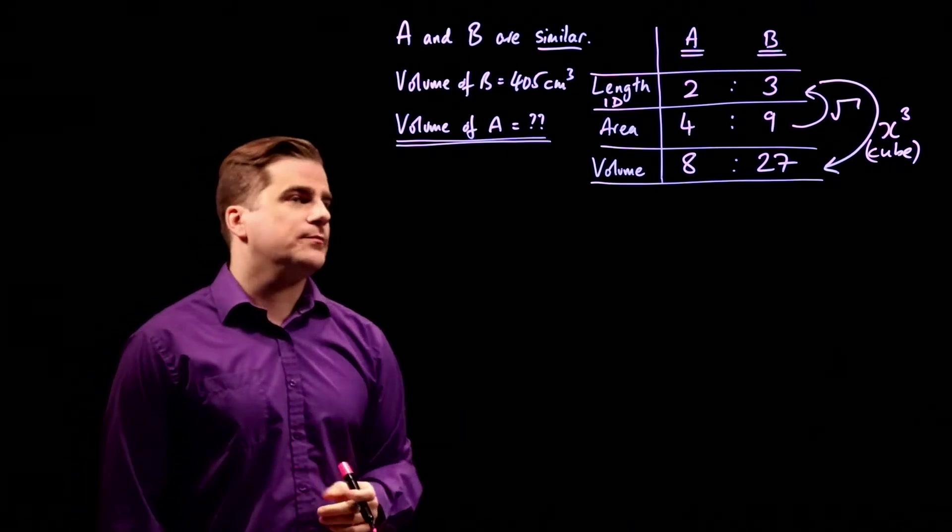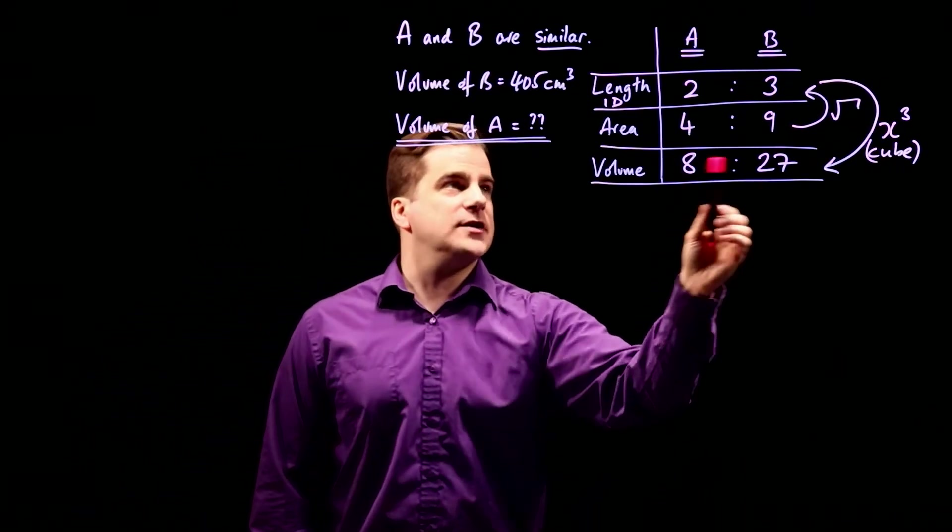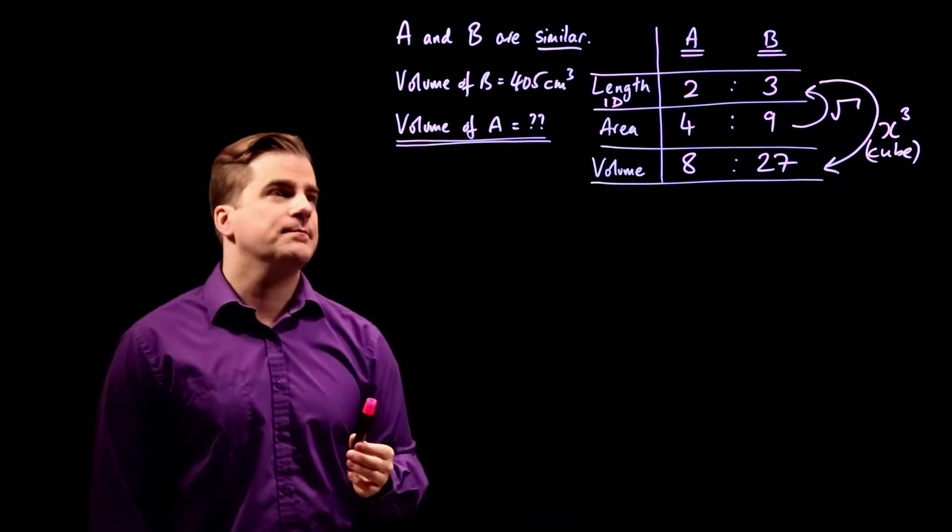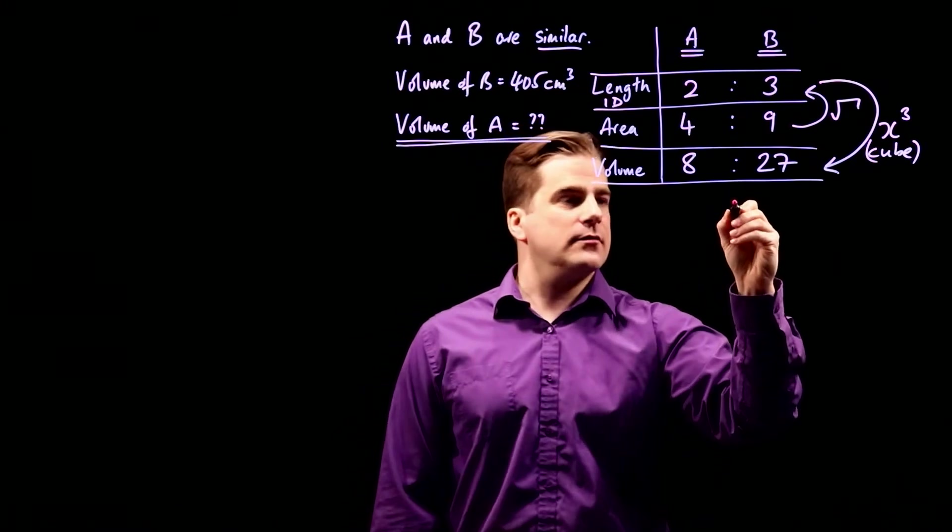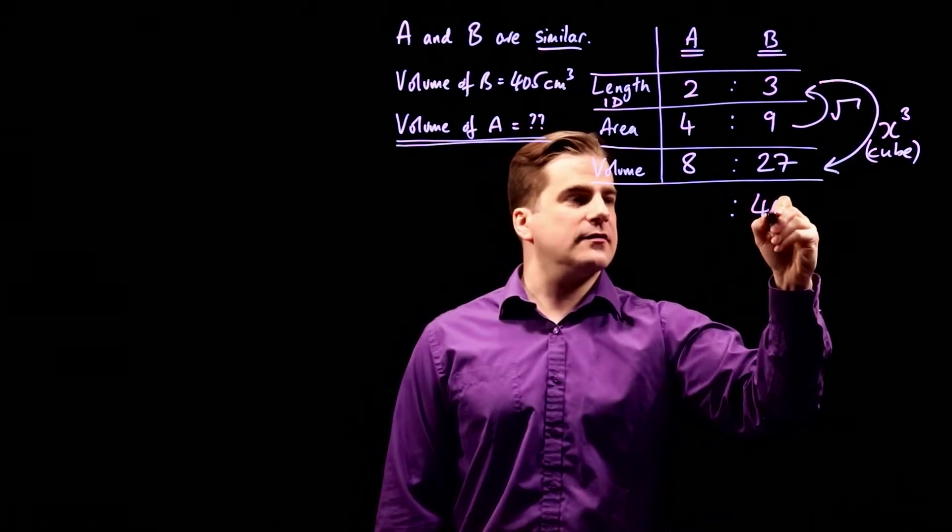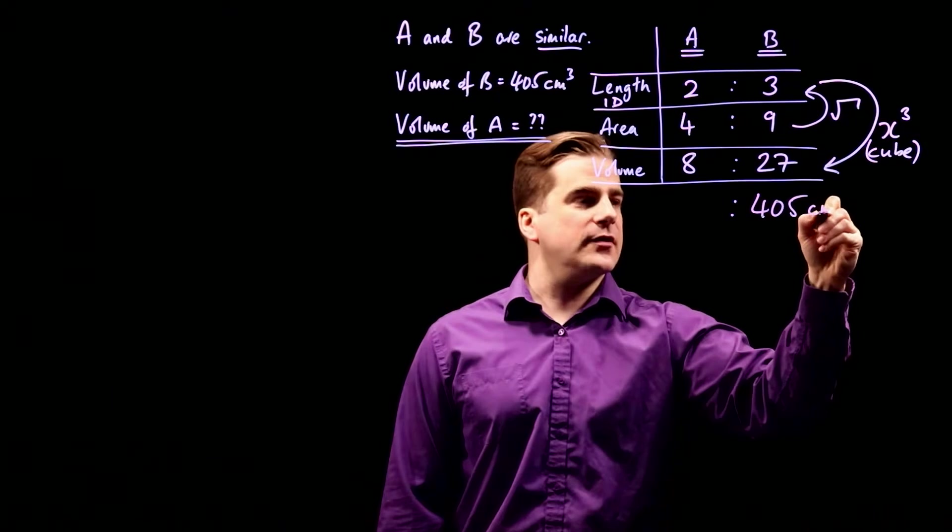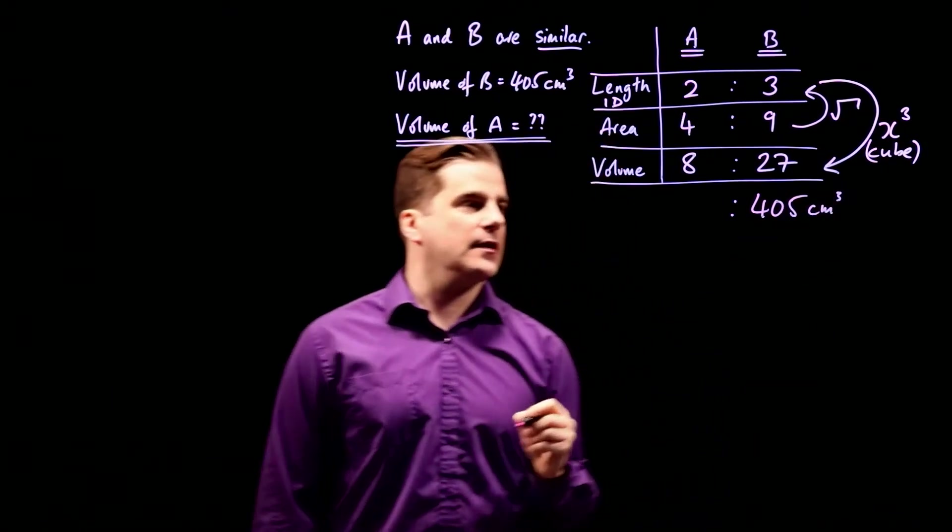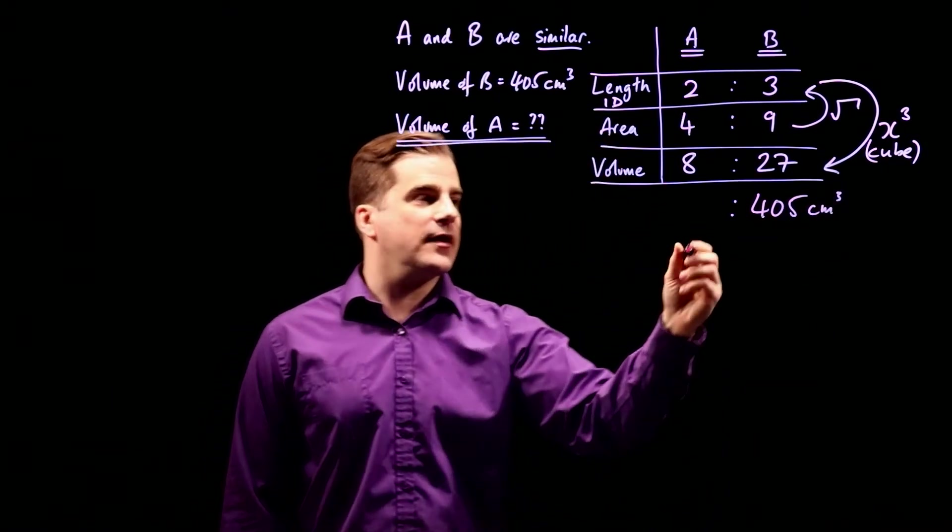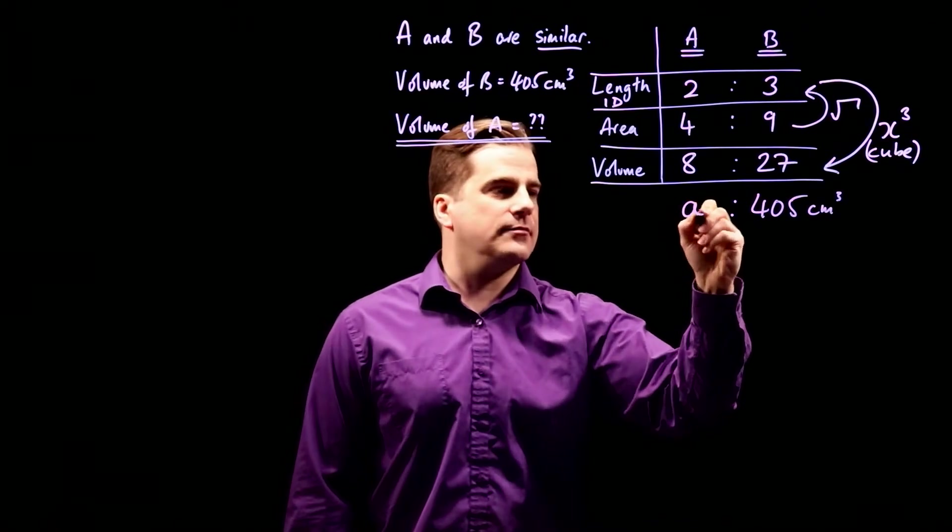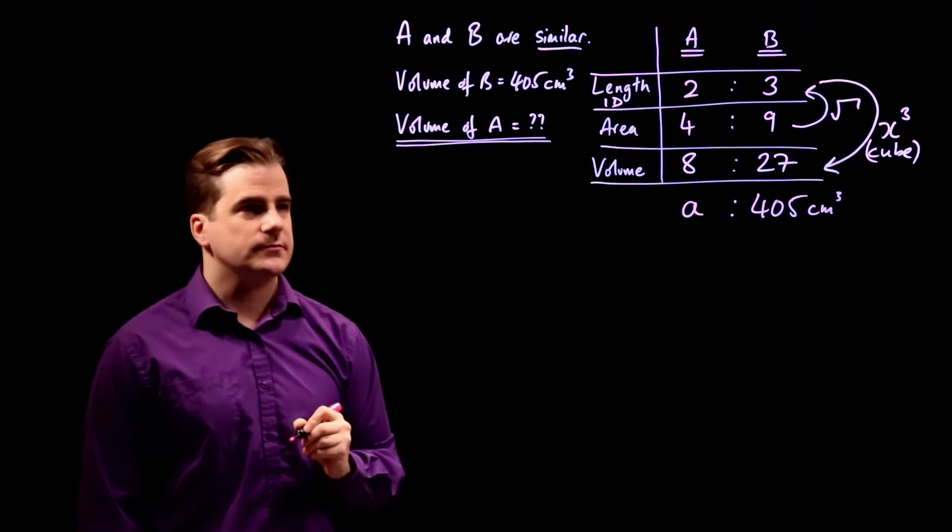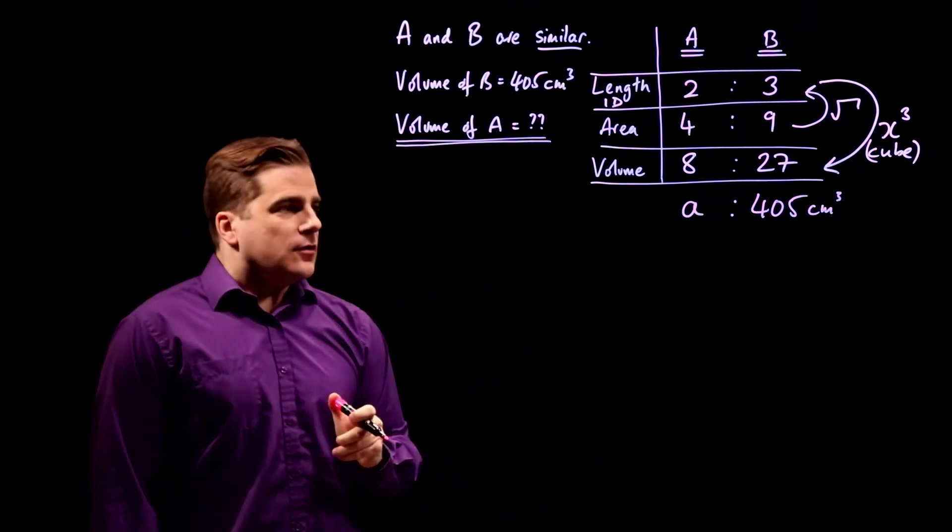Right. So we have the ratio of the volumes of A and B. And we know that the volume of B is 405. So that is 405 cm cubed. And we have to find the volume of A. So let's call it A.